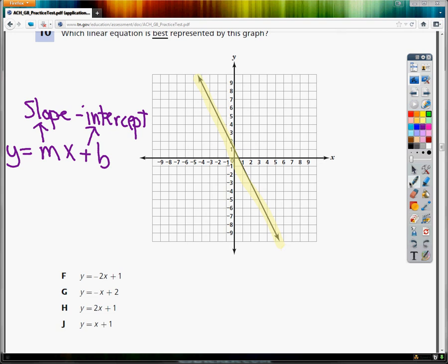So my slope chosen should be a negative. So anything down below that doesn't have a negative in it is out. So this is gone, and J is also gone. So my only options are F and G.